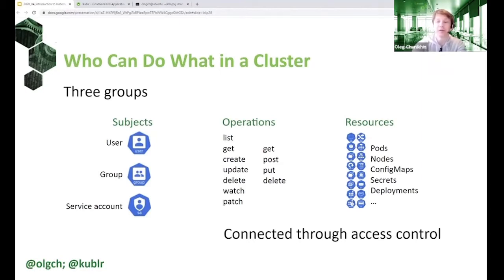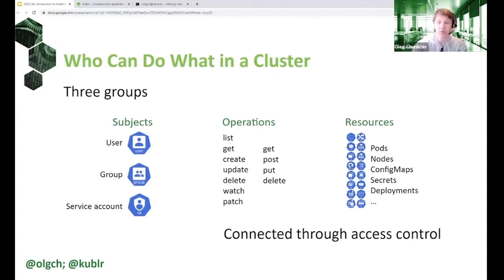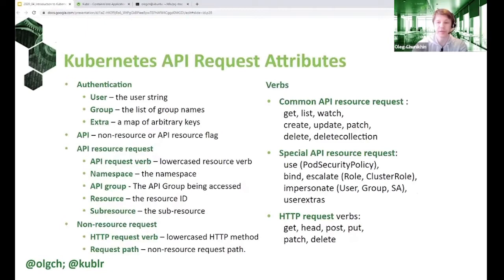In most cases, resources are Kubernetes objects — things like pods, nodes, config maps, secrets, etc. There are a huge number of Kubernetes objects in a cluster; you can check the Kubernetes API for an exhaustive list. Some resources accessible through the API are not objects — those are generic resources, sometimes called non-resource URLs — and we'll stop on that in the next slide.